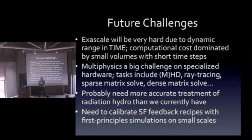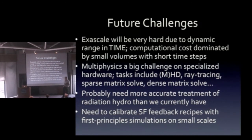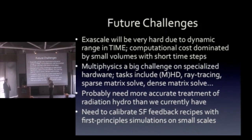If we want to do chemistry, that may require dense matrix operations. We have to do all of these things every single time step, making it much harder to adapt to specialized hardware than, say, N-body gravity. We definitely need a better treatment of radiative transfer than we currently have. And I'd say the real opportunity for advancement — at the interface with the galaxy simulations — is to calibrate star formation feedback in those simulations using results from small-scale simulations where we resolve everything and actually do the radiative transfer self-consistently.